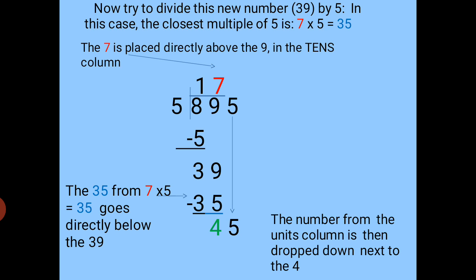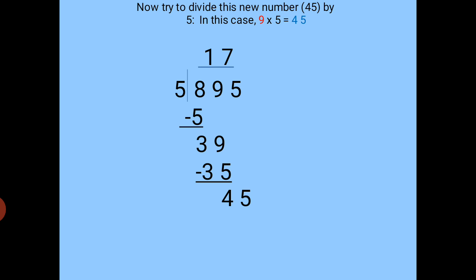The number from the units column is then dropped down next to 4, giving us 45. Now we have to search for a number nearest and also equal to or less than 45. So we divide 45 by 5. In this case, 9 × 5 = 45, so 45 is exactly divisible by 5. When we divide 45 by 5 we get 9.